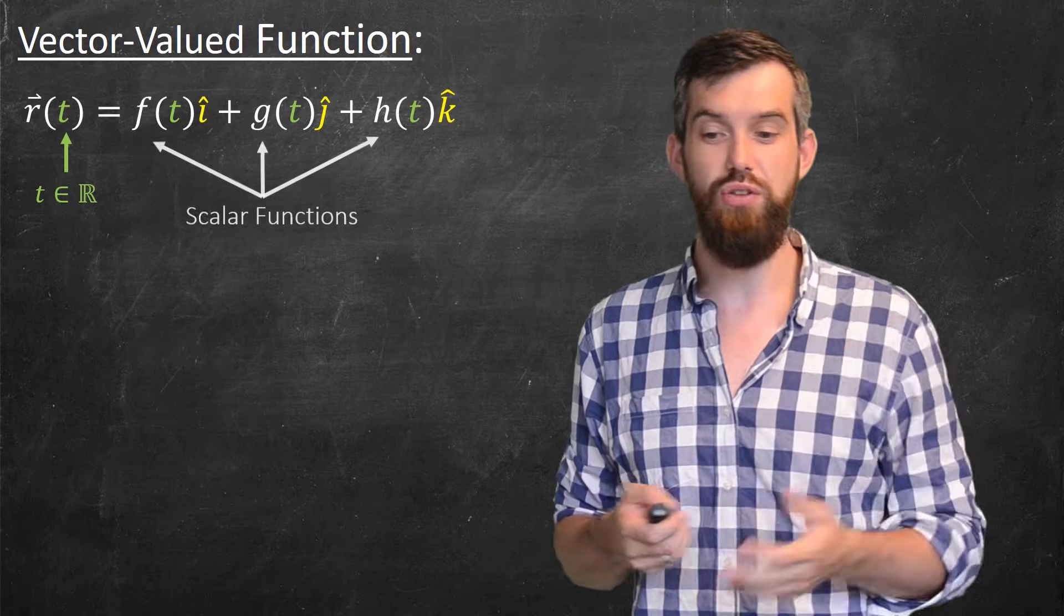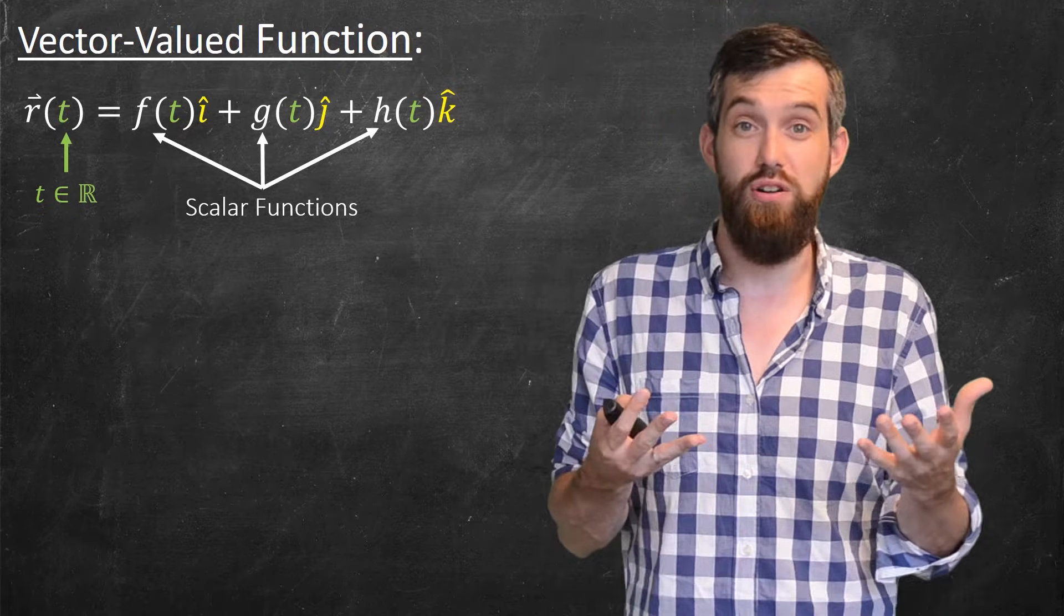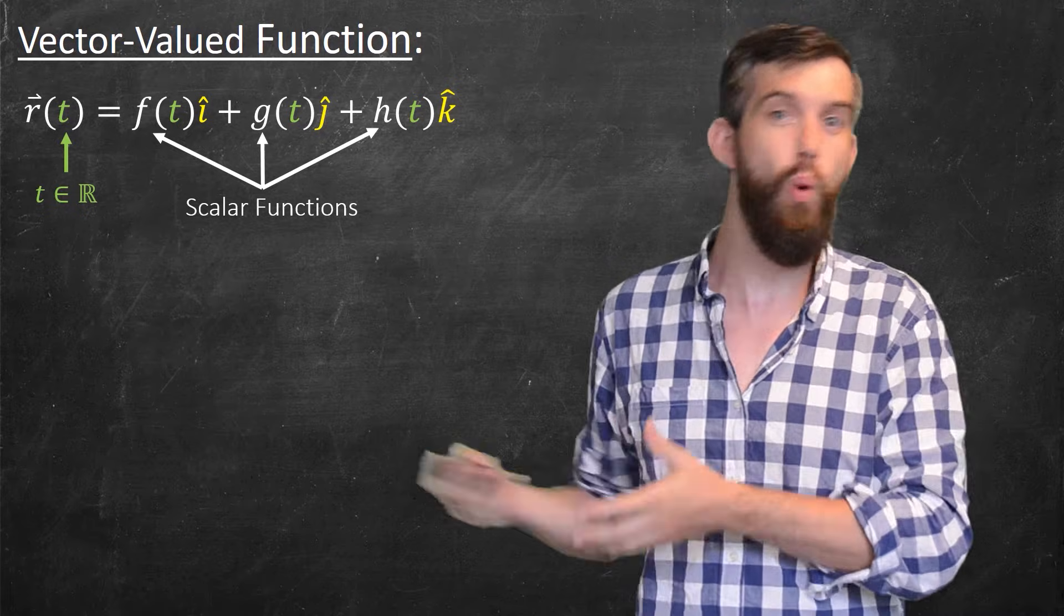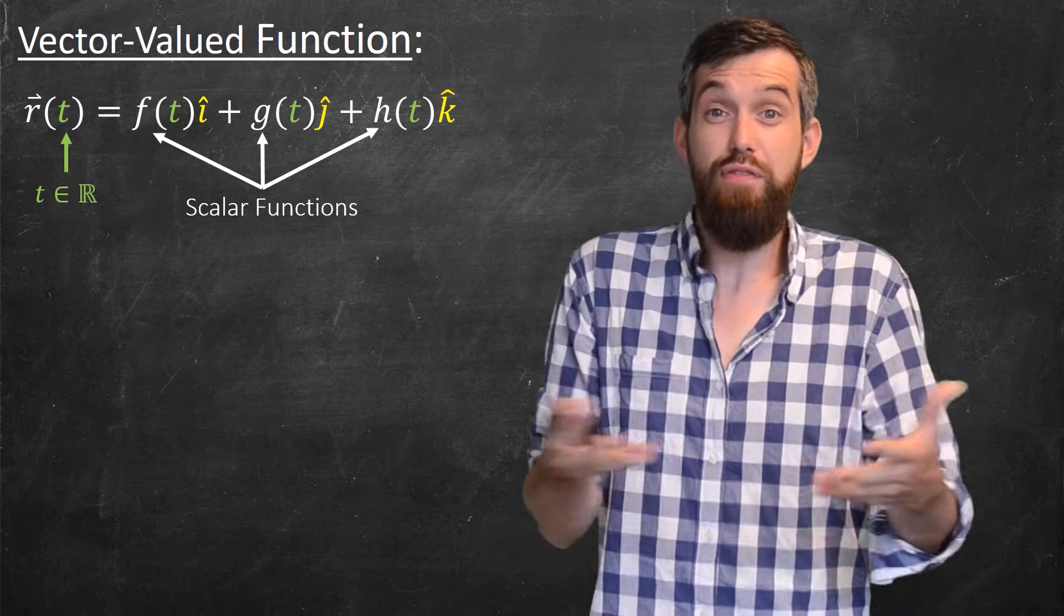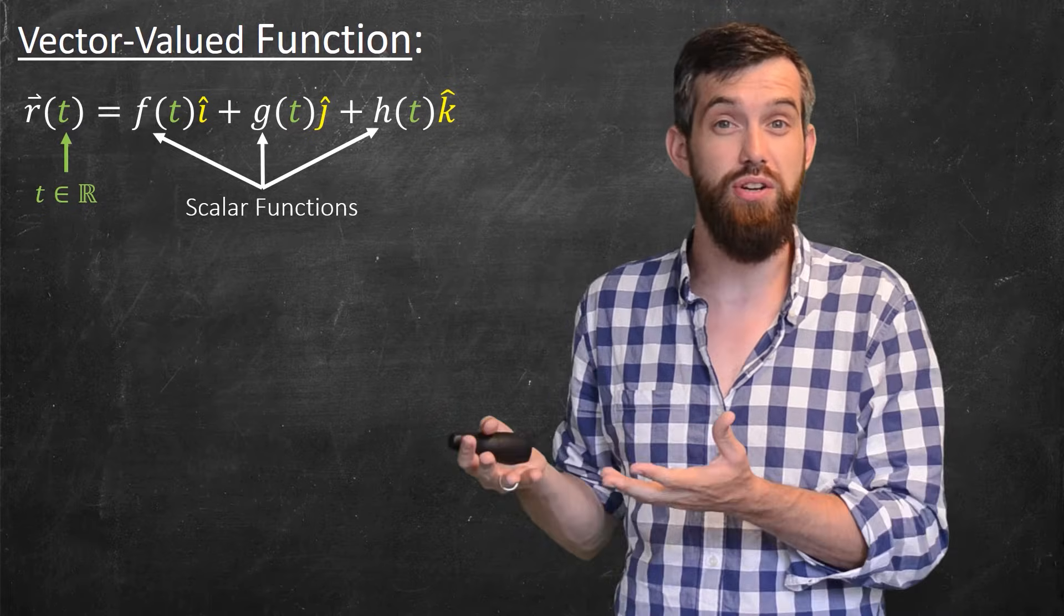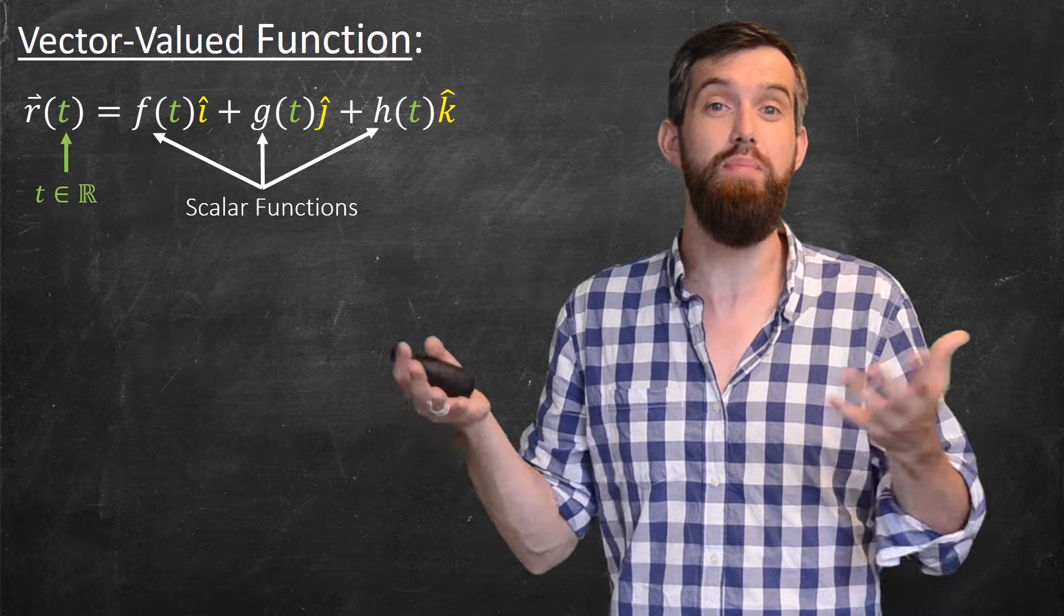The f, the g, and the h, those are what we call scalar functions, the kind of functions you would have seen back in single variable calculus, one input t and one output. But because I have three of them, all multiplying the three canonical unit vectors, then what I have is a three-dimensional output.